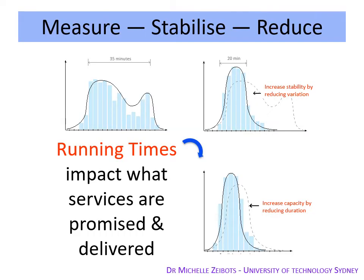Dr. Mijel Zibotz identified the measure, stabilise, and reduce framework while working on dwell time issues for Sydney Trains and Queensland Rail. The idea being that if we could segment the route, we could identify the key problem areas, work out the causes of those problems, and thus reduce variation and stabilise running times. Thereafter we could work on measures to improve running times on the key corridors and overall improve the system.